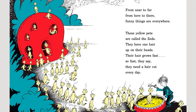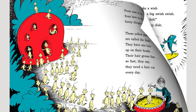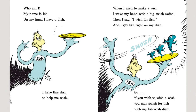These yellow pets are called the Zeds. They have one hair upon their heads. Their hair grows fast — so fast, they say, they need a haircut every day. Who am I? My name is Ish. On my hand, I have a dish. I have this dish to help me wish. When I wish to make a wish, I wave my hand with a big swiss swish. Then I say, I wish for fish, and I get fish right on my dish. So if you wish to wish a wish, you may swish for fish with my ish wish dish.